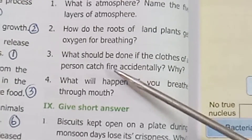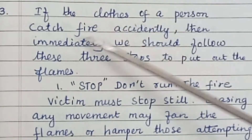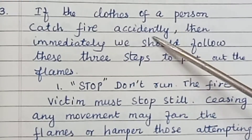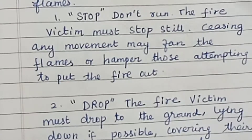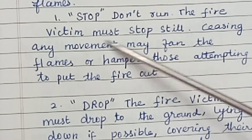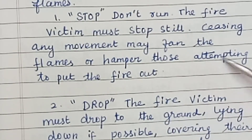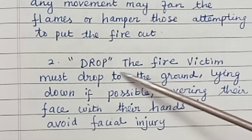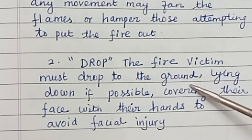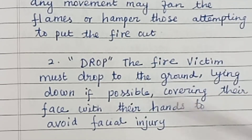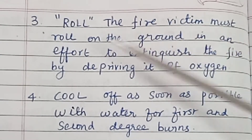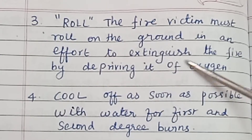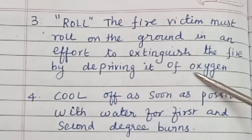Question 3: what should be done if the clothes of a person catch fire accidentally? If the clothes of a person catch fire accidentally, we should immediately follow three steps. First — Stop: do not run; the fire victim must stop still, as any movement may fan the flames. Second — Drop: the fire victim must drop to the ground, lying down if possible, covering their face with their hands to avoid facial injury. Third — Roll: the fire victim must roll on the ground in an effort to extinguish the fire by depriving it of oxygen.